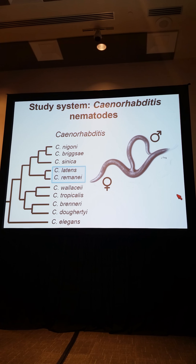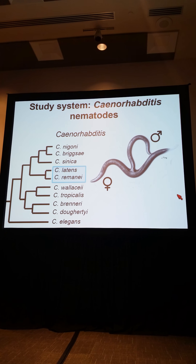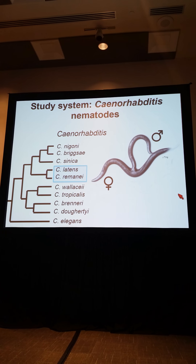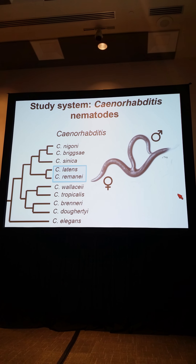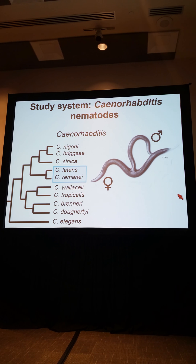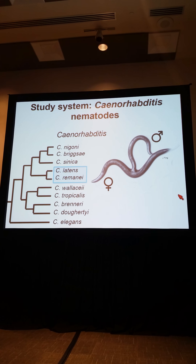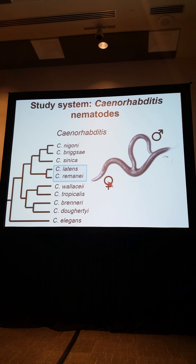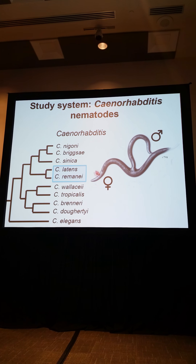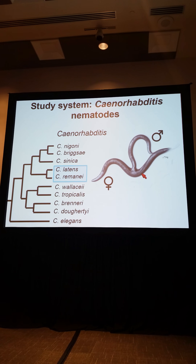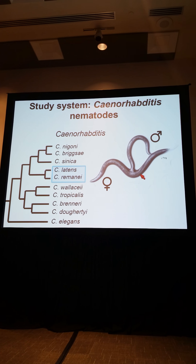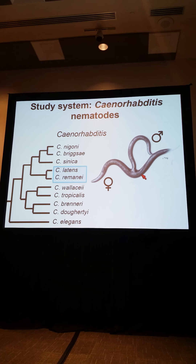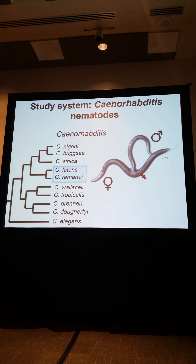I've been looking at these two patterns experimentally using Caenorhabditis nematodes. Here I'm showing just the elegans group of Caenorhabditis, though there are actually about 50 known species. Most of them, like C. latens and C. remanei, are male-female species. They're basically all found on rotting fruit and are found all over the world.